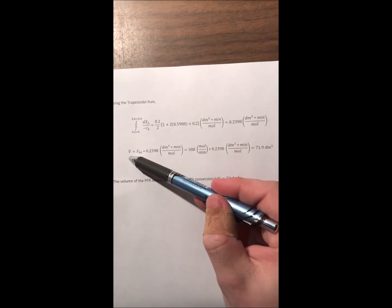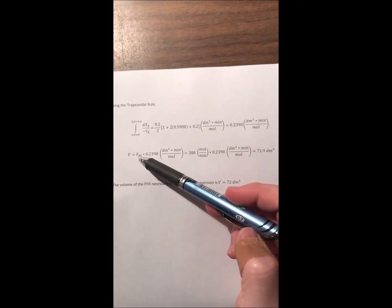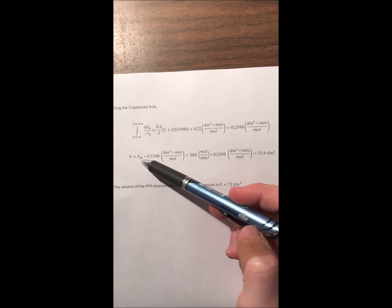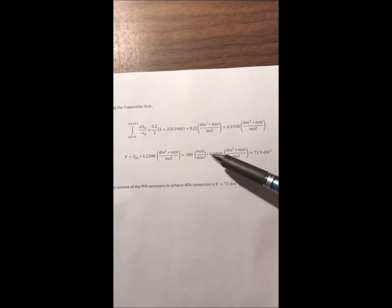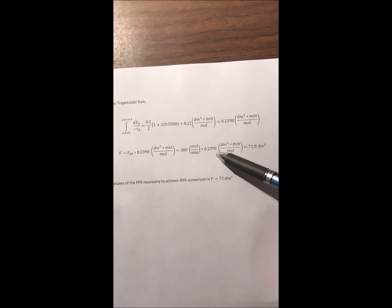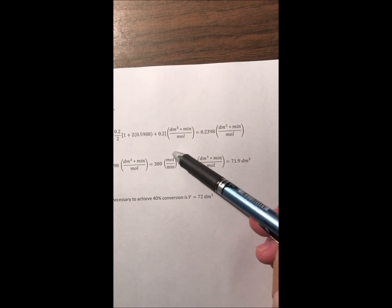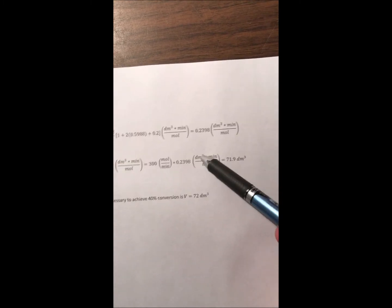Now to find the volume we know that we have to take the entering molar flow rate which is 300 moles per minute and multiply that by our previous answer that we just got using our trapezoidal rule. And we can see that the moles cancel and the minutes cancel leaving us just with decimeters cubed.